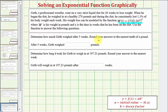And there are two questions we want to answer. First, determine how much Girth weighed after five weeks, round to the nearest tenth. And then second, determine how long it took for Girth to weigh in at 197.23 pounds. And just as before, we'll be solving the second part graphically.